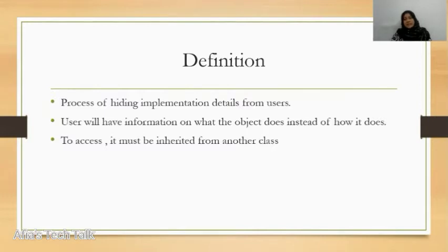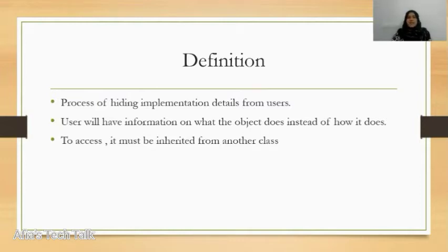We are going to start an OOPs concept. Whenever we need to access any functions in that class, we can use an object to call that function. In the abstract class, abstraction is a process of hiding the implementation details from users.